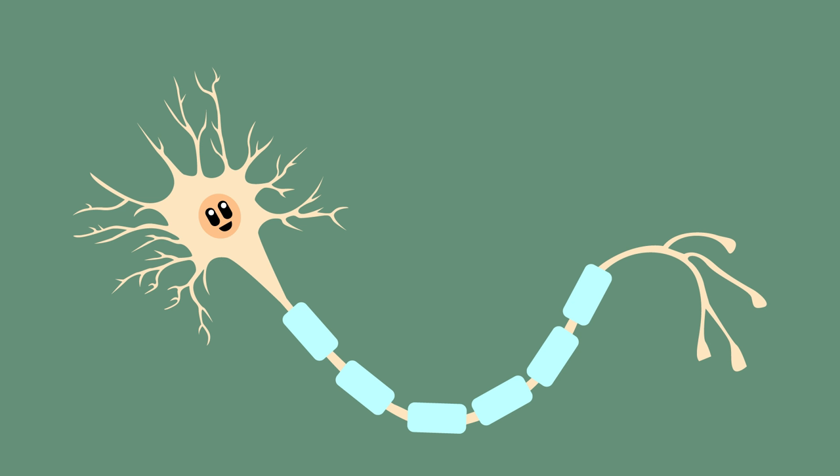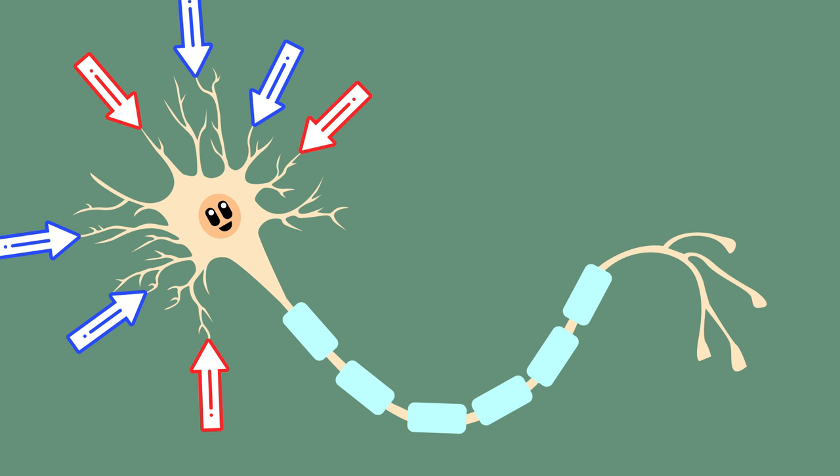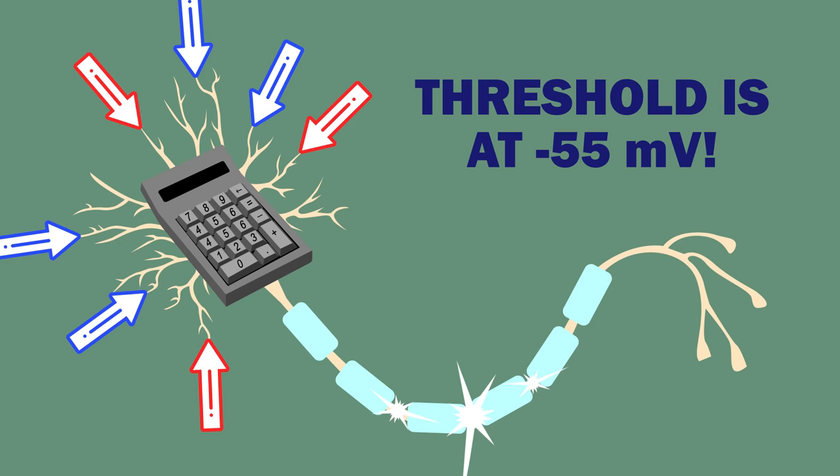Dendrites are a neuron's input zone, where a neuron can get EPSPs and IPSPs from other neurons. The neuron cell body is like a calculator, integrating these signals. When the summation of graded potentials results in a potential of minus 55 millivolts at the axon hillock, an action potential occurs.